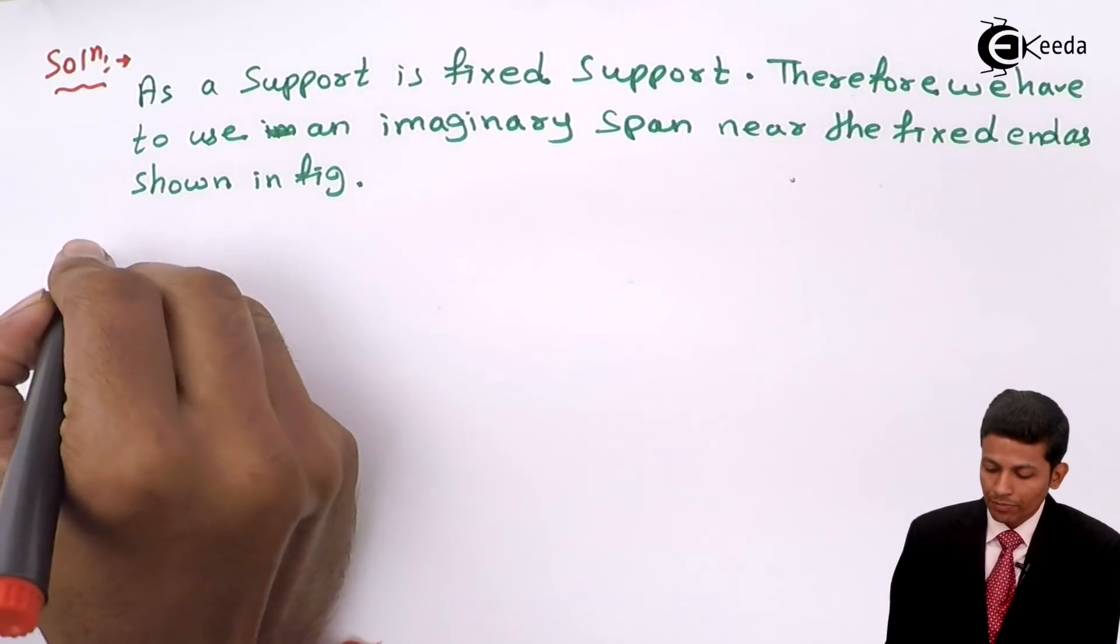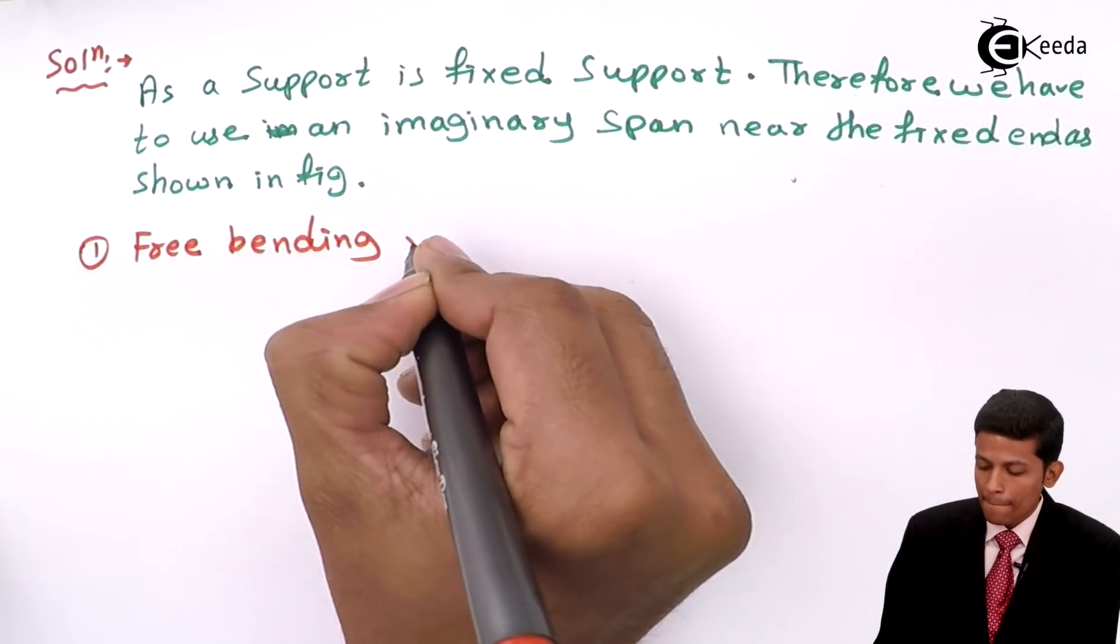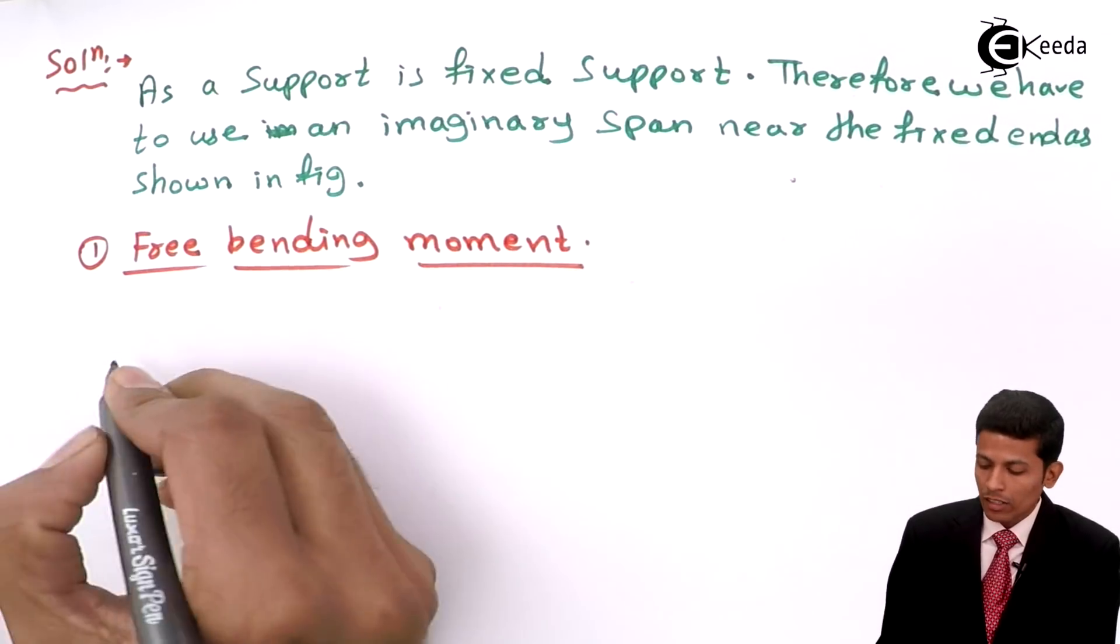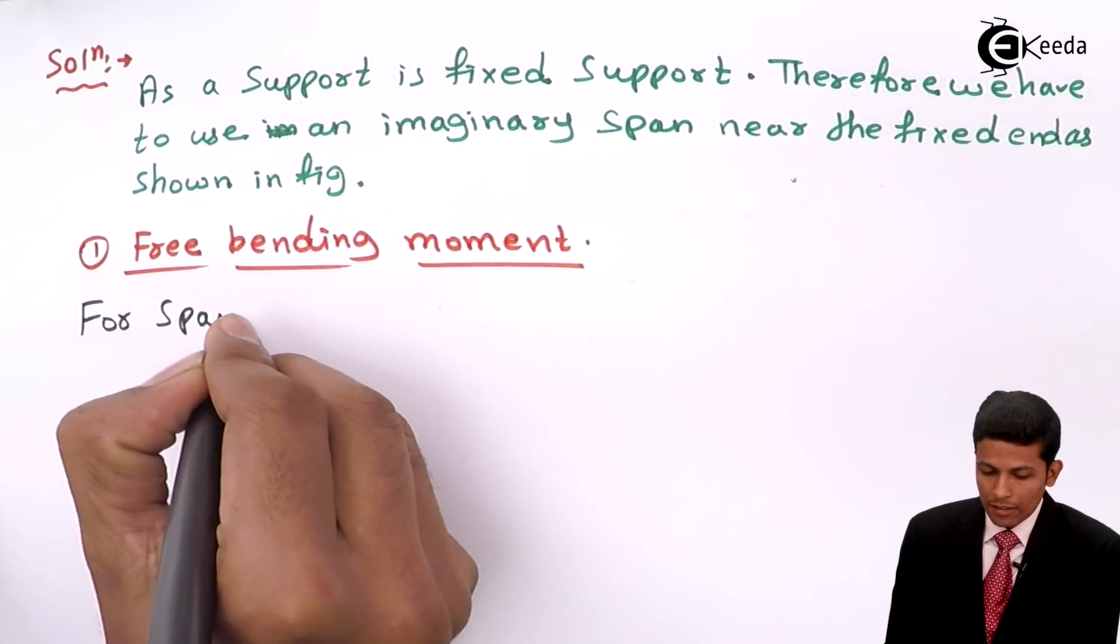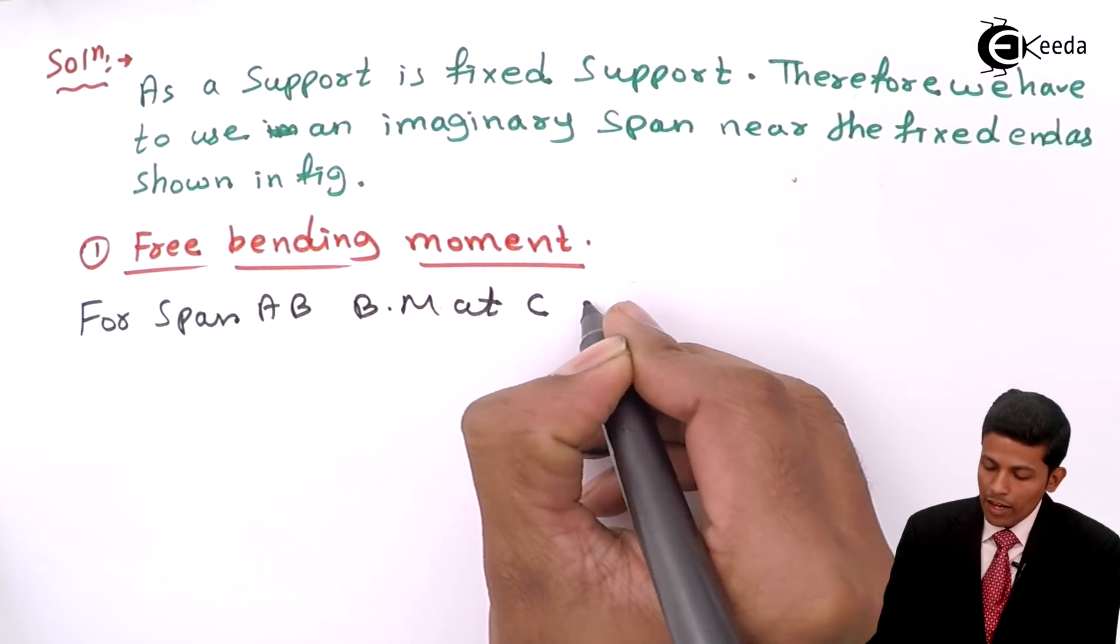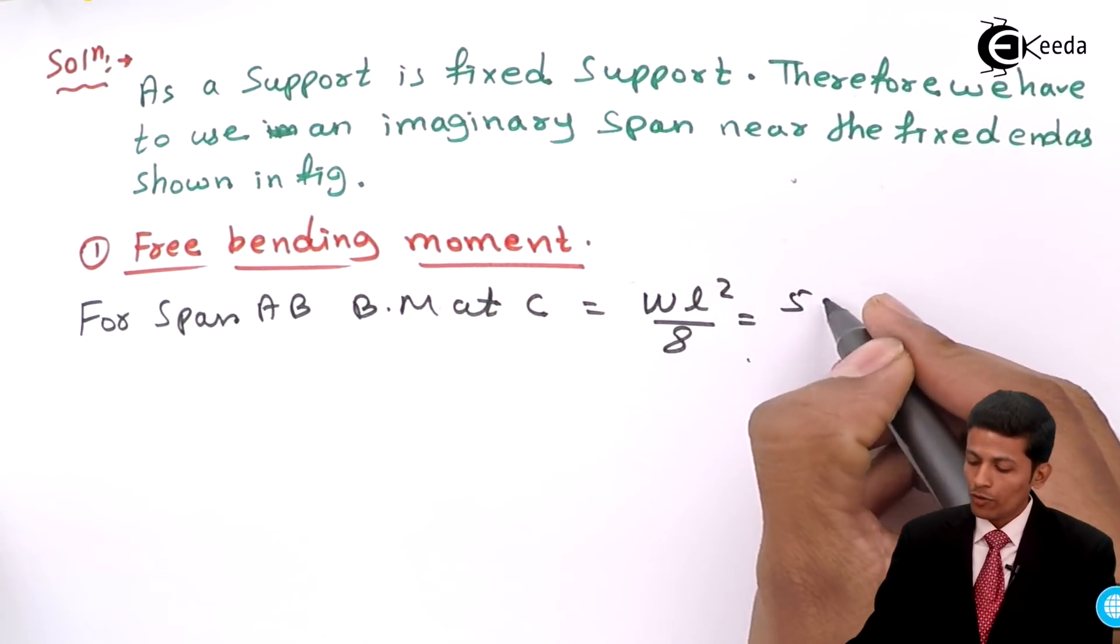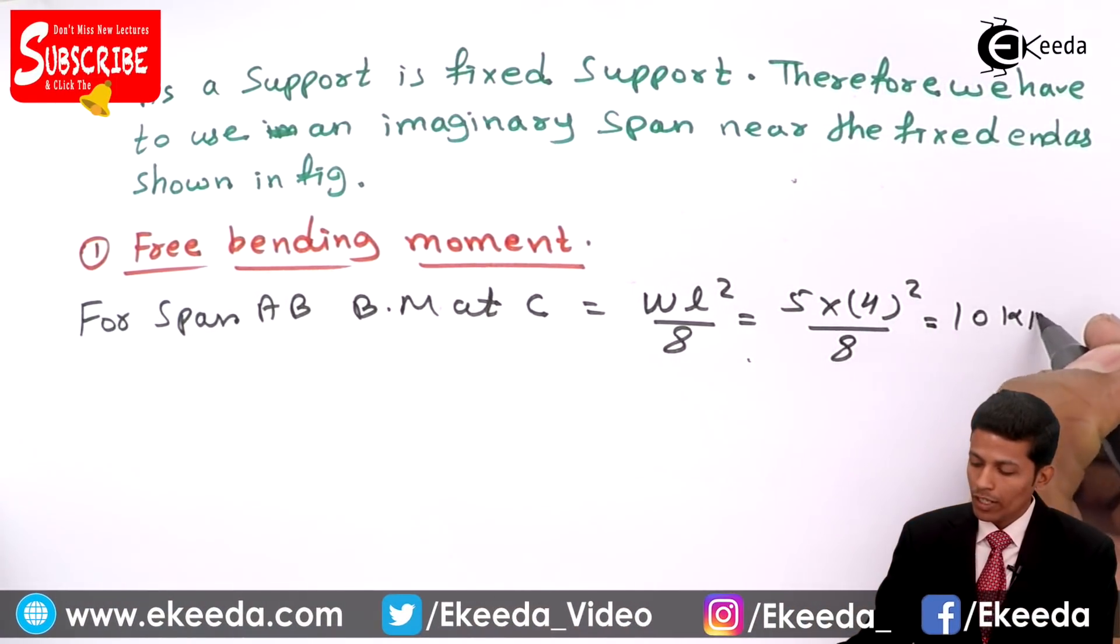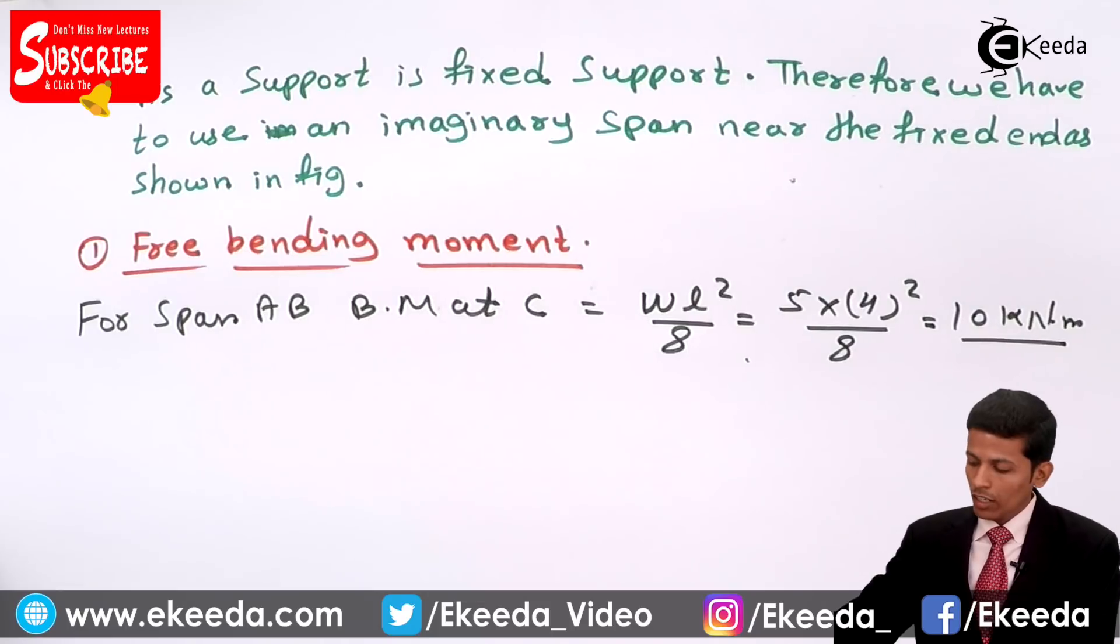Our first step will be free bending moment. For span AB, bending moment at C will be, formula will be WL square upon 8 since it's overall UDL. So 5 into 4 square upon 8, value will get 10 kilonewton meter. Only one beam is there, that's why 10 kilonewton meter only.